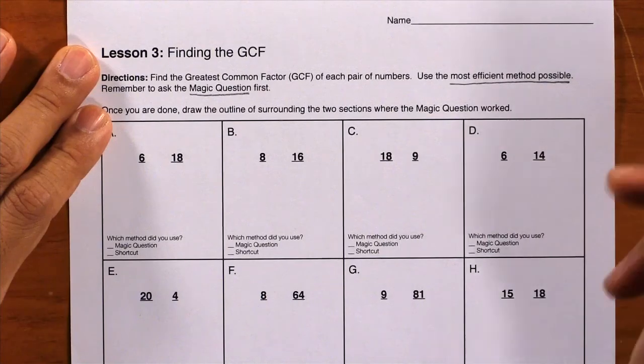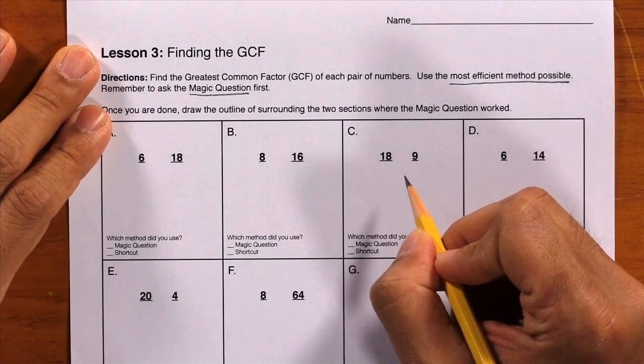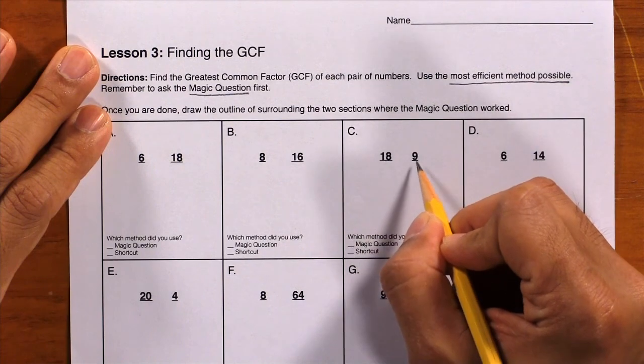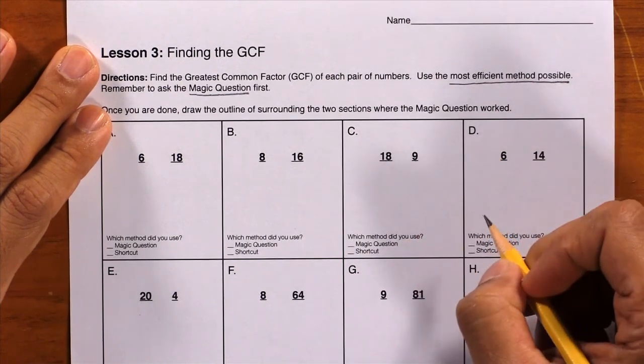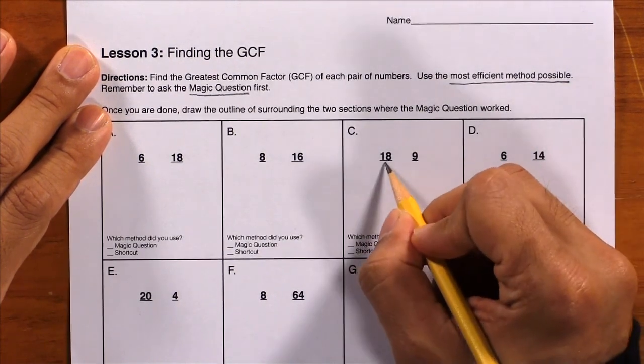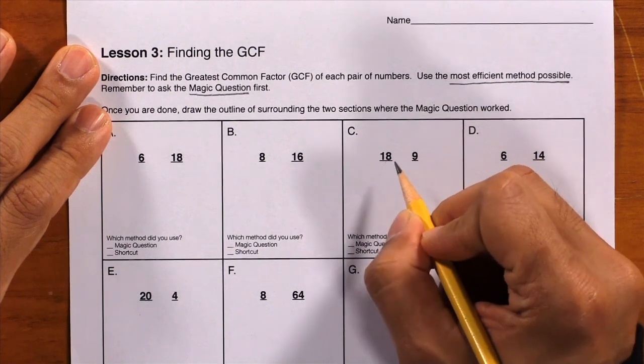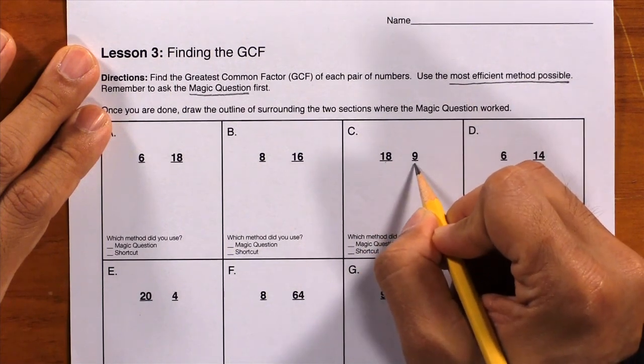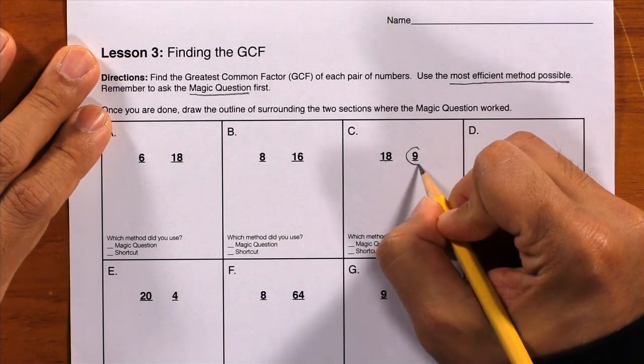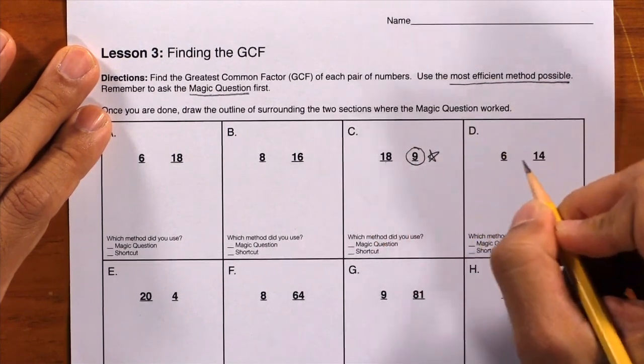Take a look at box C. Here, we're going to find the GCF of 18 and 9. Ask the magic question first: larger number divided by the smaller number. Can you do 18 divided by 9 evenly? The answer is yes, so circle and star, and we're done.